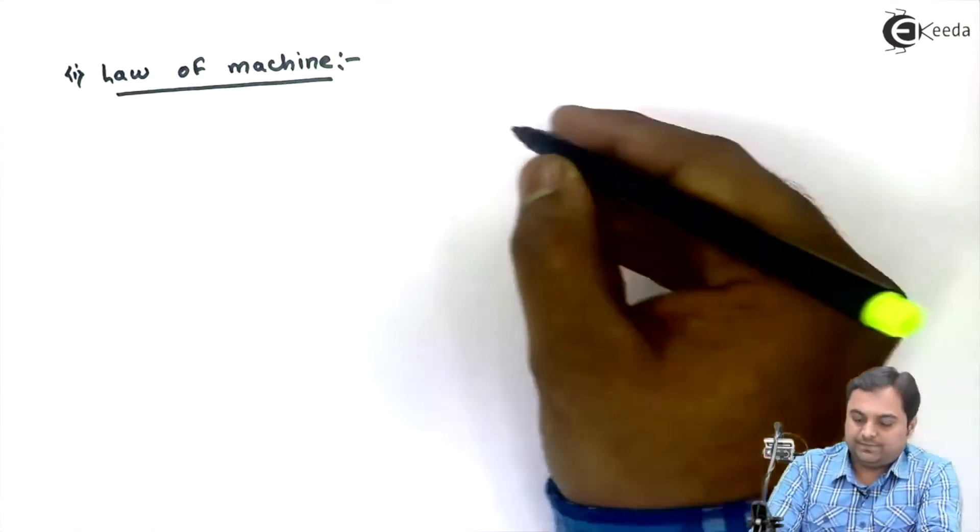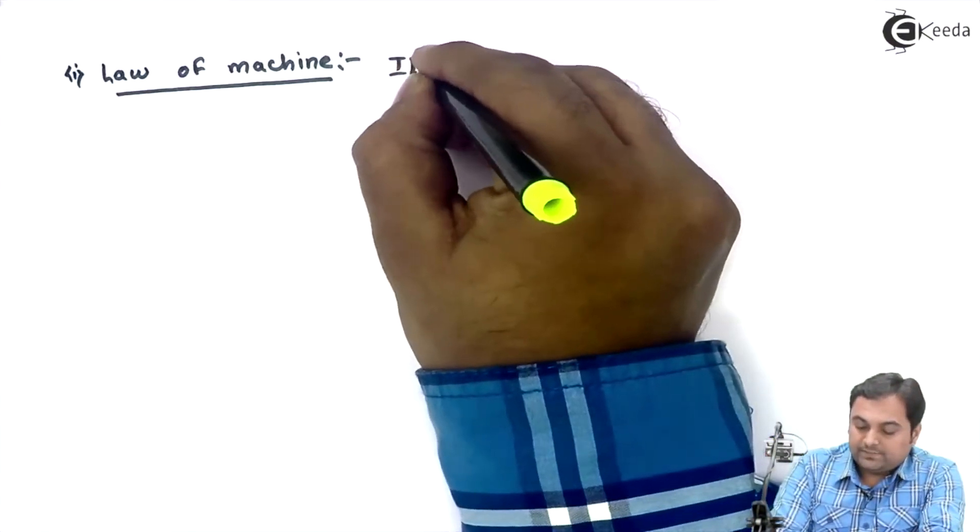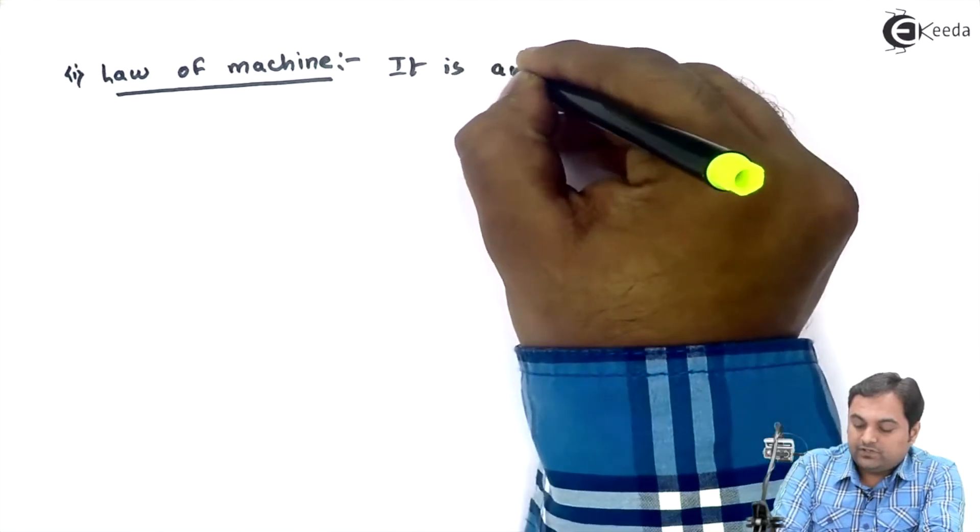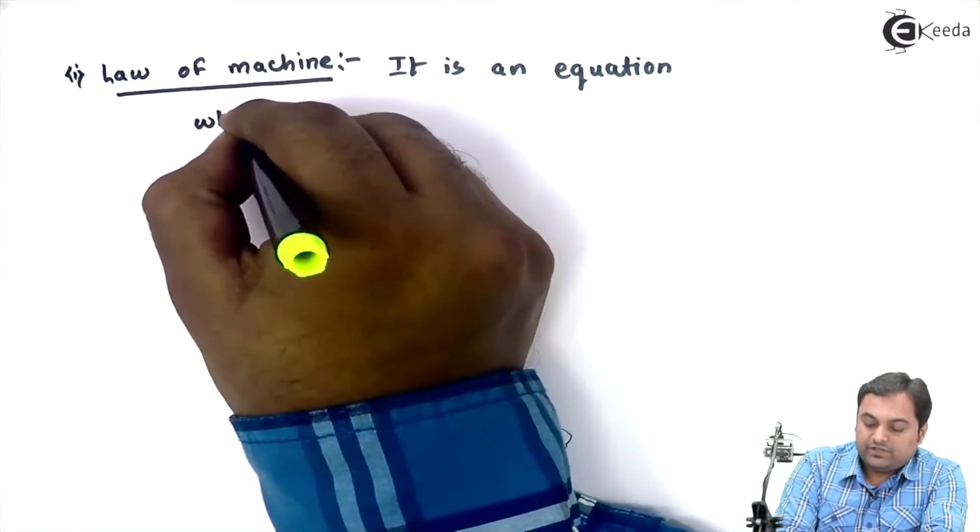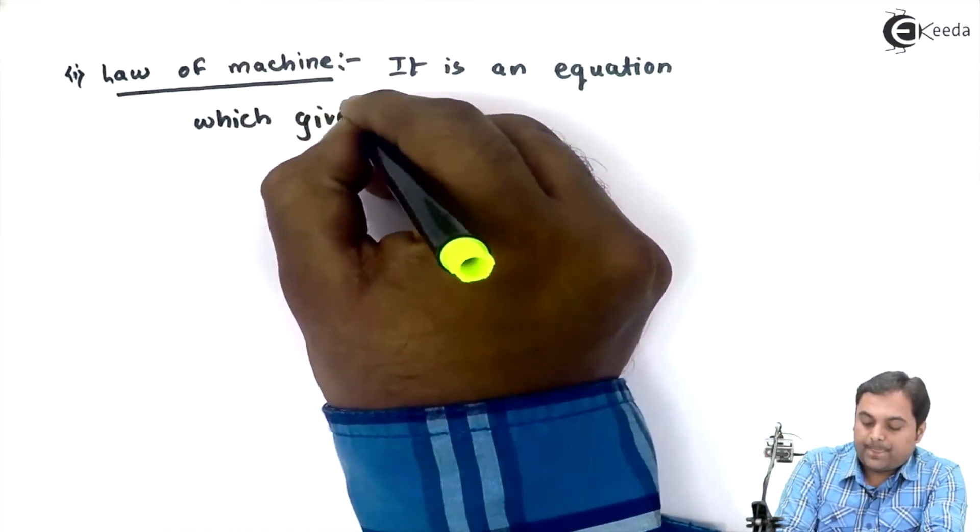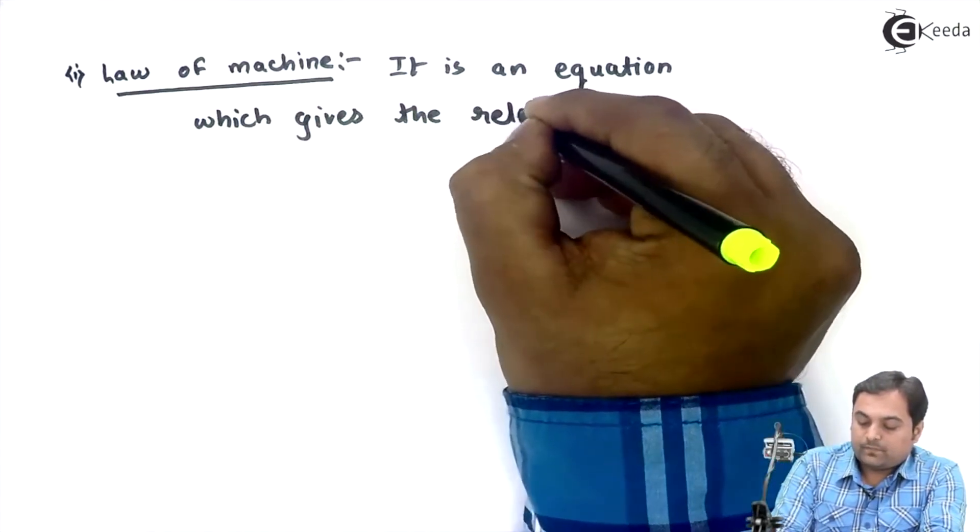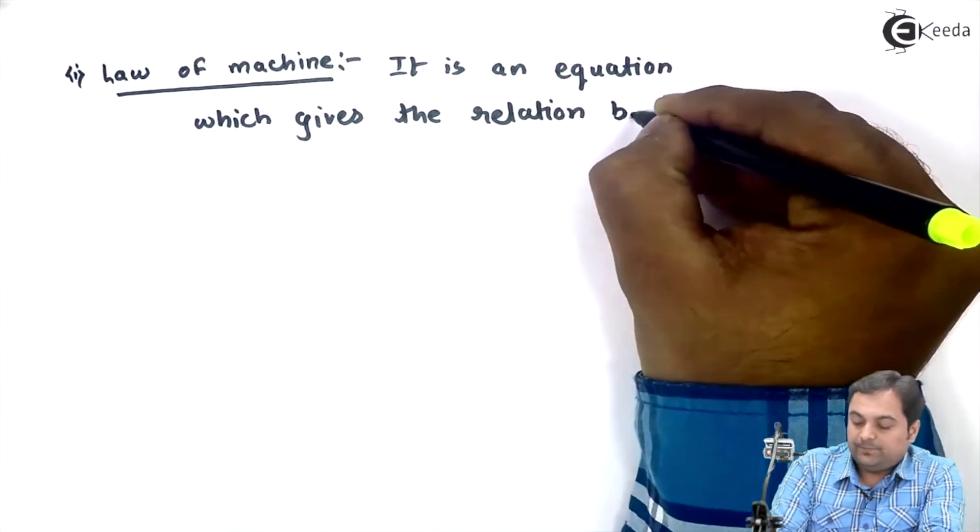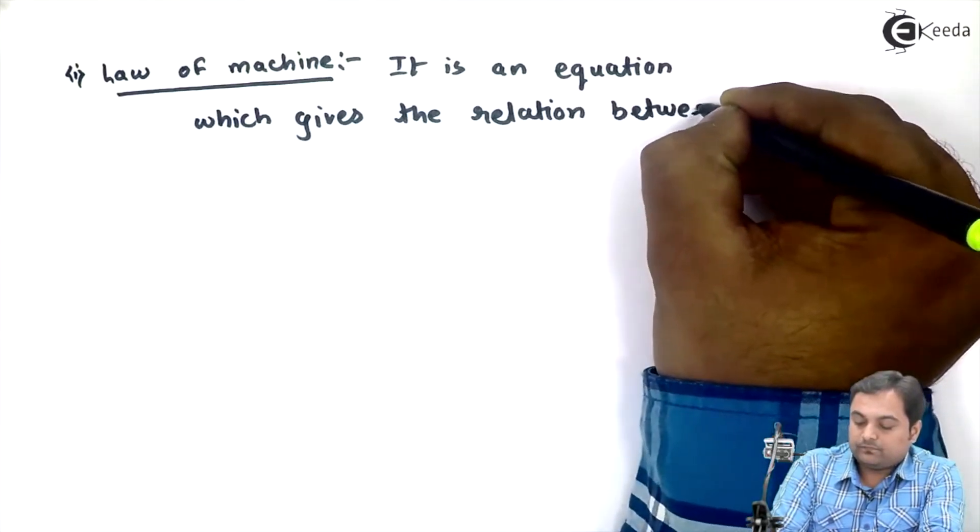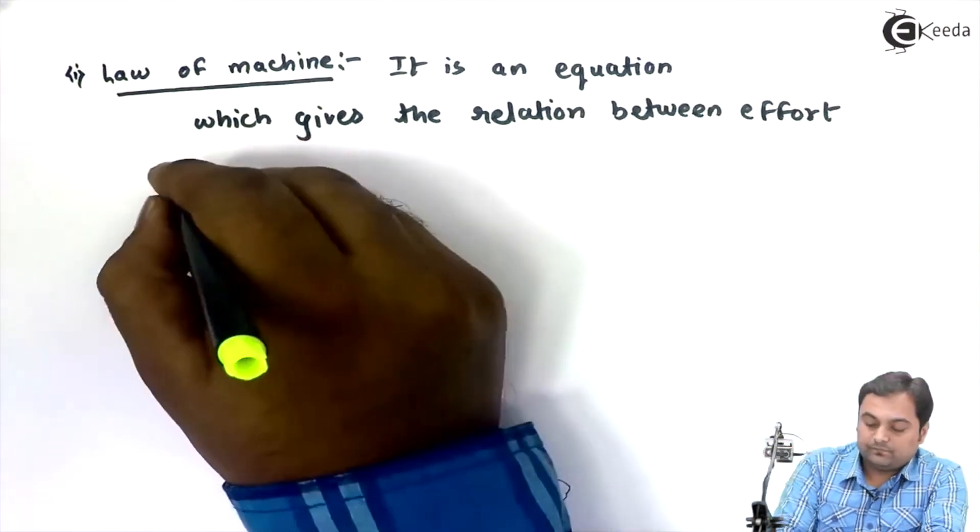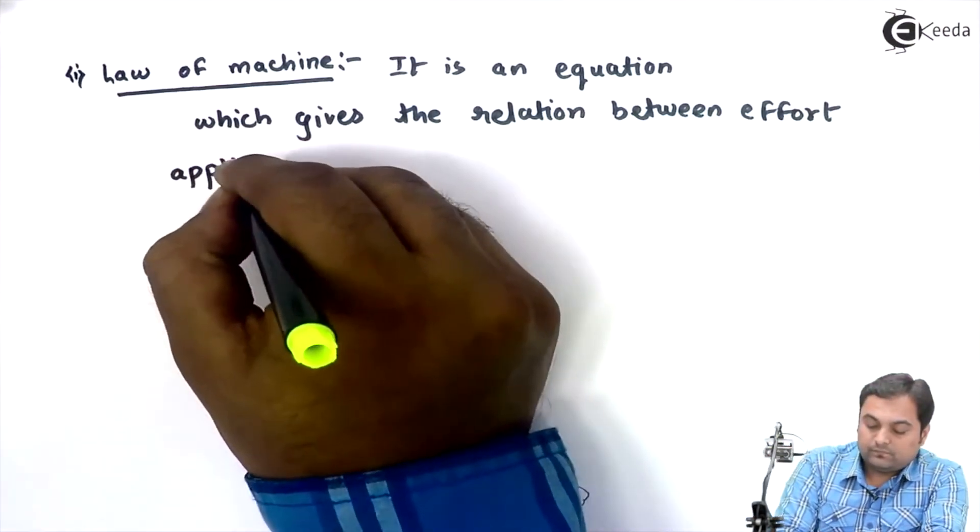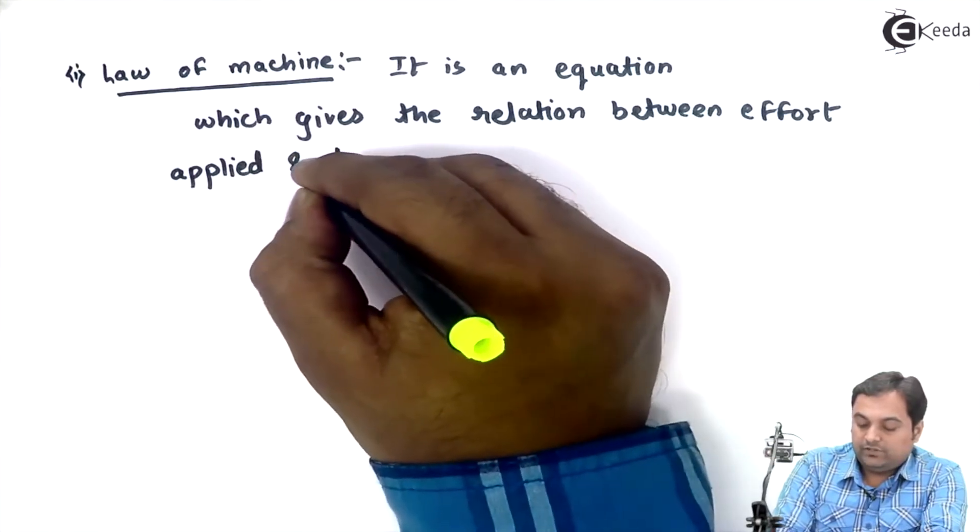Law of machine is an equation which gives the relation between effort applied and load lifted.